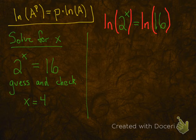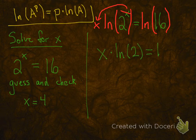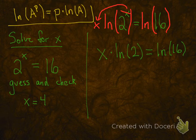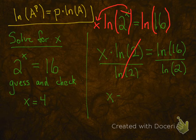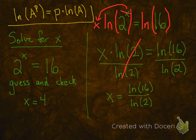The property of natural logs up in the top left there allows you to take that x and bring it down out in front. So let me rewrite this. Now it's x times ln of 2. ln of 2 is just a number, so you can divide by it. And this is what we get for x.